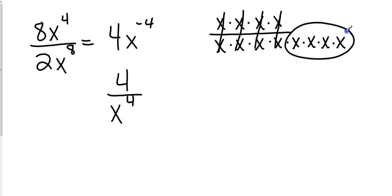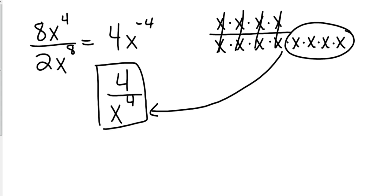Over here, my x to the 4th was on the denominator. Now what if your negative exponent is on the bottom? If your negative exponent is on the bottom, then you flip it to the top, which we're going to see in just a moment on another problem. Let's go ahead and take a look at that.